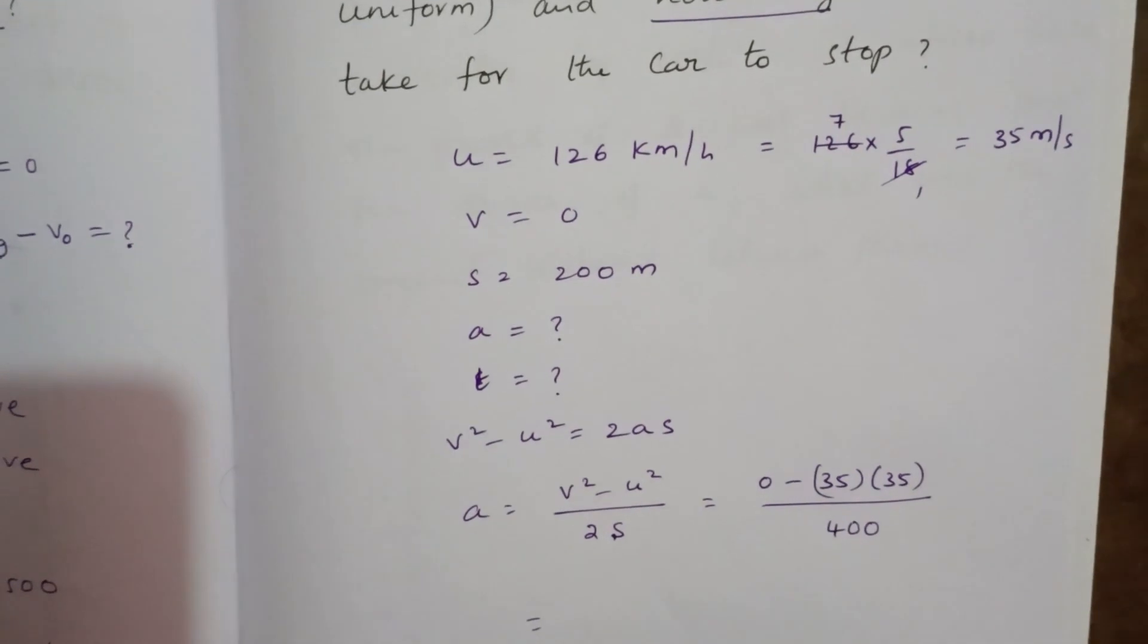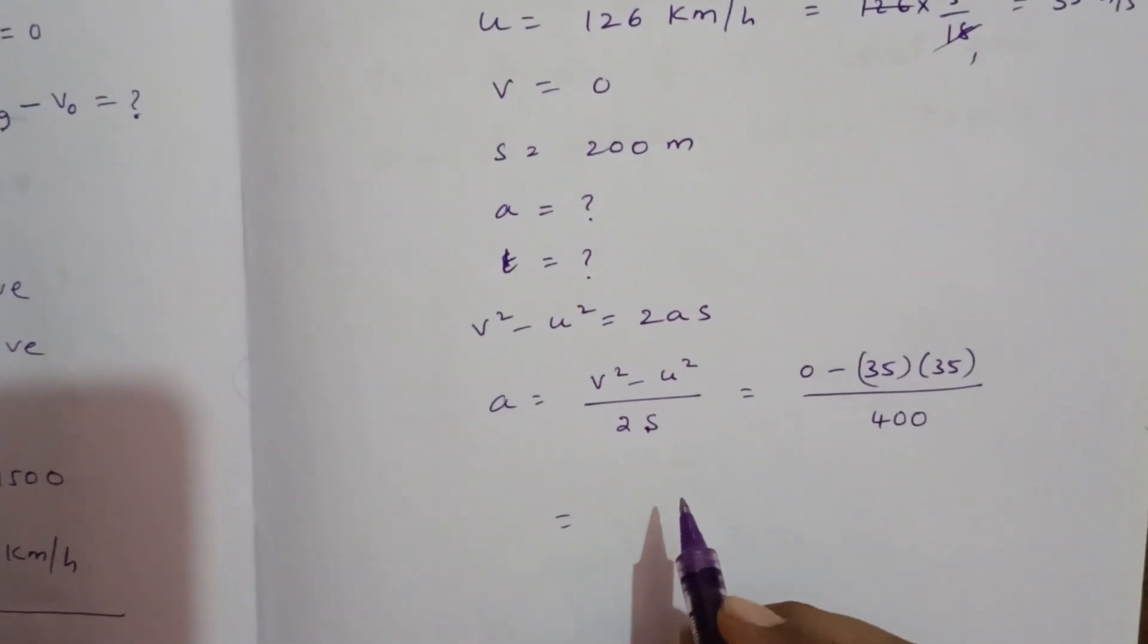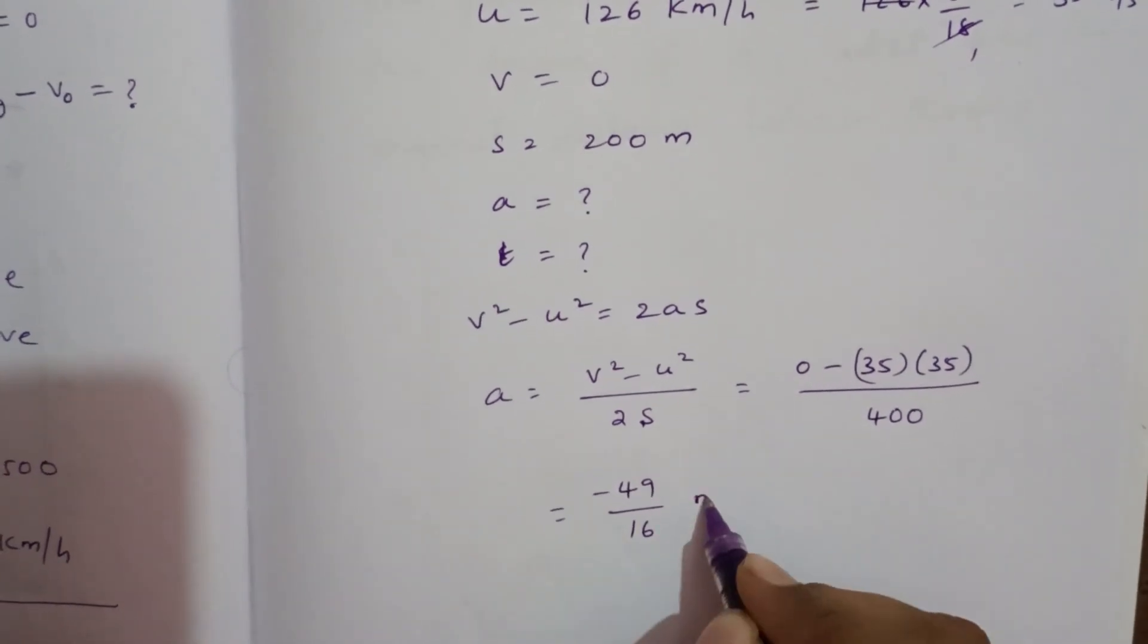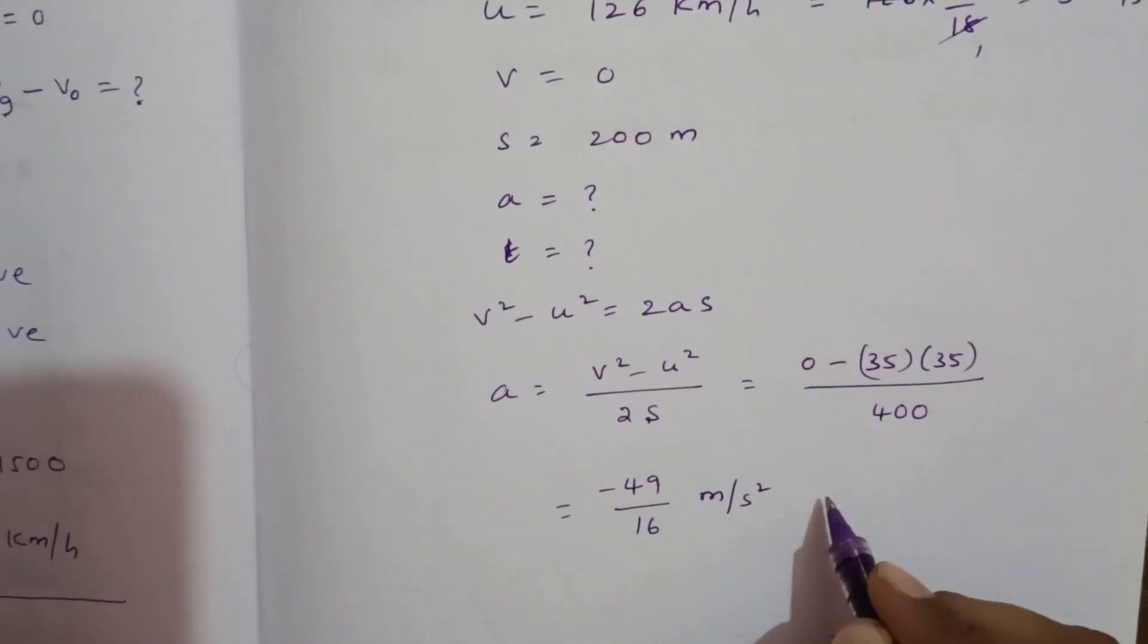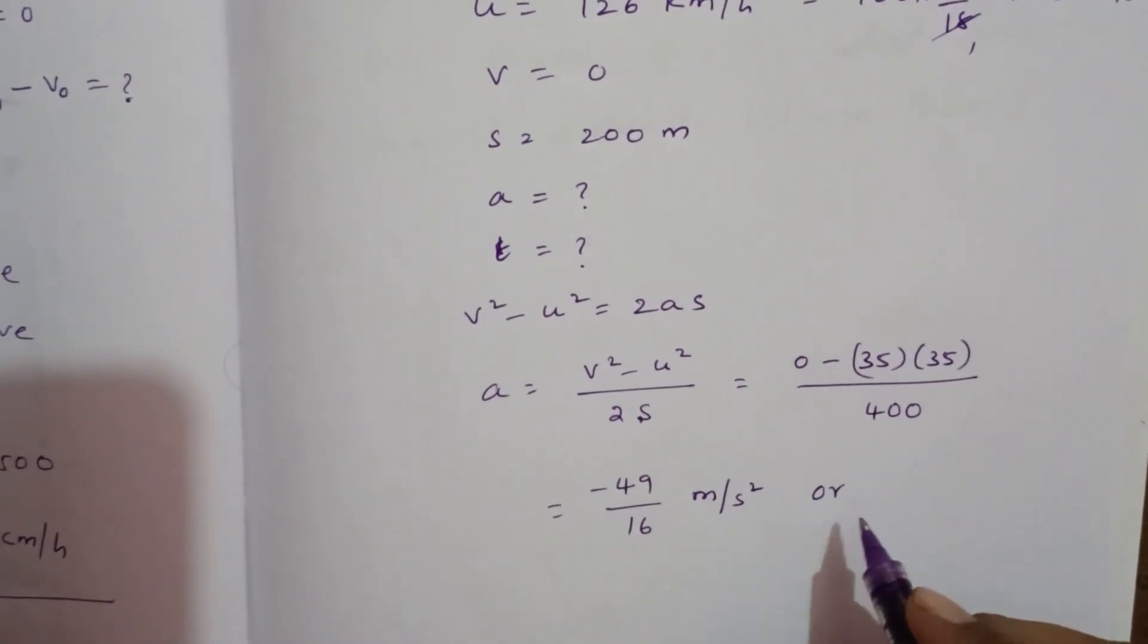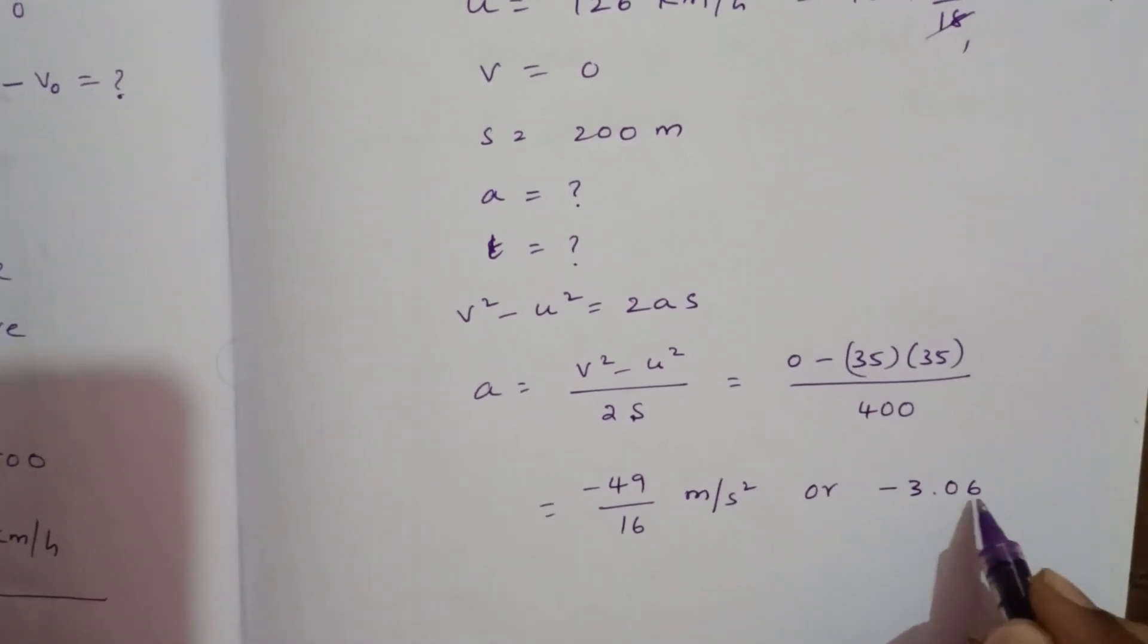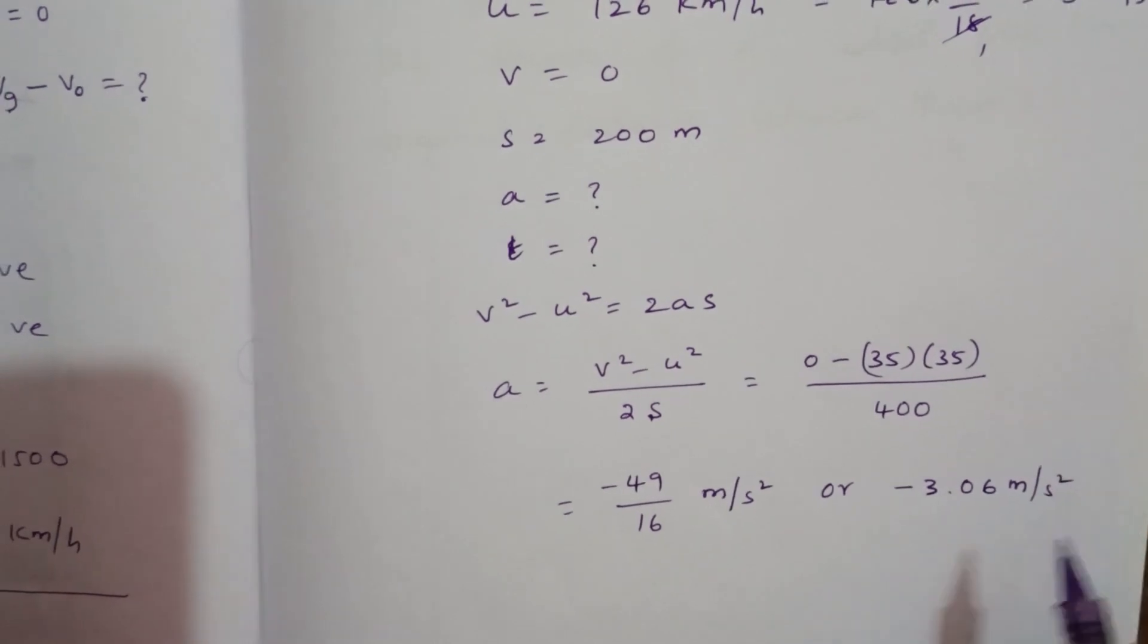Now if you do simplification, you will get negative 49 divided by 16 m per second square, or if you do further simplification, minus 3.06 m per second square.